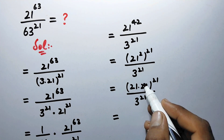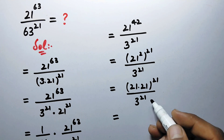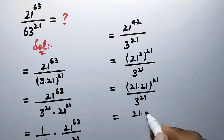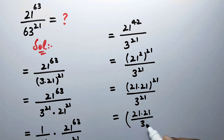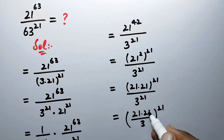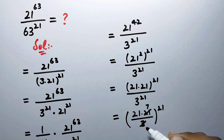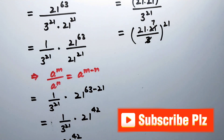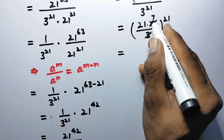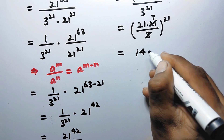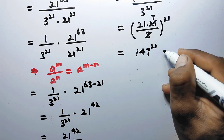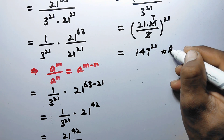We can see that the power in the numerator as well as in the denominator is the same. So we can take the same power out, writing 21 times (21 divided by 3) to the whole power 21. Since 21 divided by 3 equals 7, we get 21 times 7 equals 147 to power 21, and that is our final answer.